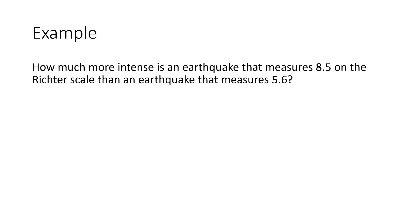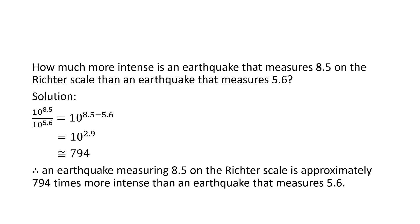So how much more intense is an earthquake that measures 8.5 than an earthquake measuring 5.6? We just divide 10 to the 8.5 by 10 to the 5.6, and we get 10 to the 2.9. When we subtract those exponents, that is equal to approximately 794, meaning an earthquake measuring 8.5 on the Richter scale is approximately 794 times more intense than an earthquake measuring 5.6.